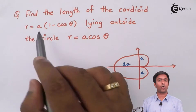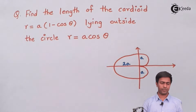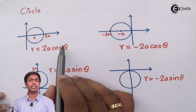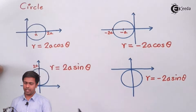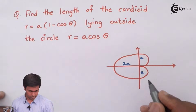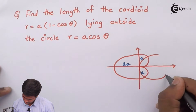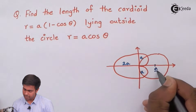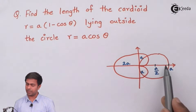On the screen you can see that I've drawn the cardioid. Now I'll draw the circle r equal to a cos theta. I covered that circle in the previous video. r equal to 2a cos theta is a circle which lies on the x-axis with total diameter 2a. Here we have r equal to a cos theta, so the diameter will be a. So here I'll draw it — this will be a/2 and this will be a, because this circle r equal to a cos theta has diameter a.